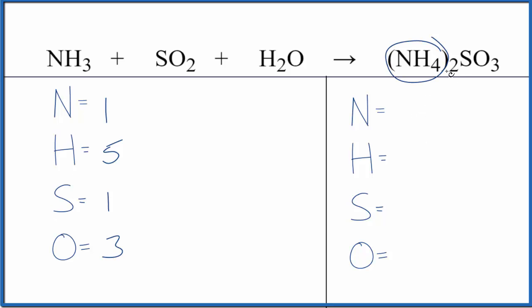On the product side, we have two times everything in parentheses, so two times one, that gives us two nitrogens, two times four, eight hydrogens, one sulfur, and then three oxygen atoms. So these are the atoms that we need to balance.